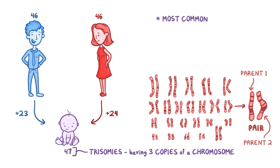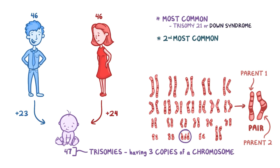The most common trisomy in live births is trisomy 21, or Down syndrome. But the second most common trisomy in live births is trisomy 18, or Edwards syndrome.